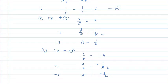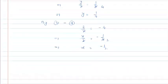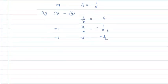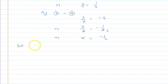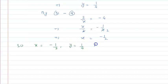So we have found the values of both x and y. The final answer is: value of x is equal to minus 1 by 2, and value of y is equal to 1 by 4. I hope you understood the solution. Thank you.